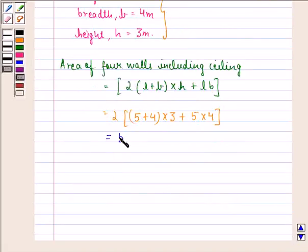And 5 into 4 is 20 so it is 54 plus 20 that is equal to 74 meter square. So area of 4 walls including the ceiling would be 74 meters square.